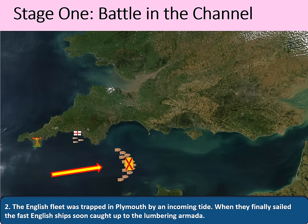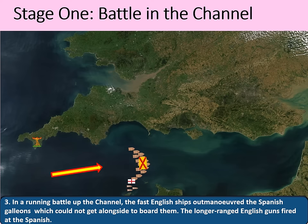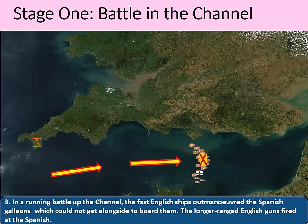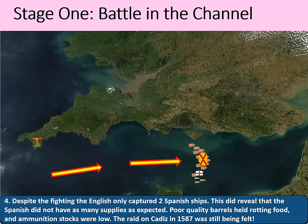You may have heard the famous story of Sir Francis Drake finishing his game of bowls whilst watching the Armada sail by. This wasn't an act of reckless abandon — Drake was an experienced sailor who knew he couldn't sail against an incoming tide. When they finally sailed, the fast English ships soon caught up with the lumbering Armada. In a running battle up the Channel, the fast English ships outmanoeuvred the Spanish galleons, which could not get alongside to board them, and the long-range English guns fired at the Spanish. There were particular battles off the Isle of Wight and some damage was done, but the Duke of Medina Sidonia was above all being rushed. Despite the fighting, the English only captured two Spanish ships, though this revealed that the Spanish did not have as many supplies as expected — poor-quality barrels held rotting food, and ammunition stocks were already running low, a direct result of Drake's raid on Cadiz in 1587.